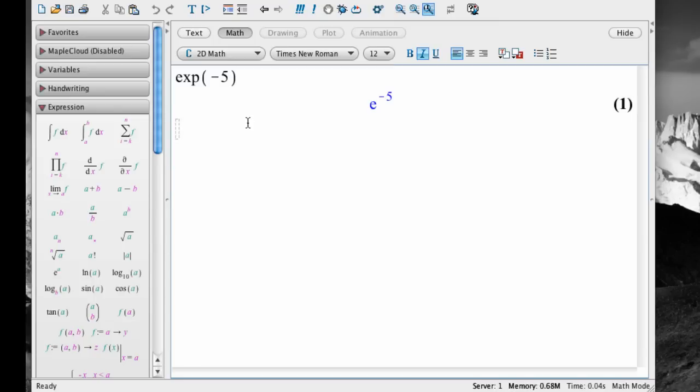To take a square root, for example, we use the function sqrt. For example, here's the square root of 2. We type sqrt, open parenthesis, 2, then close parenthesis, and hit enter.